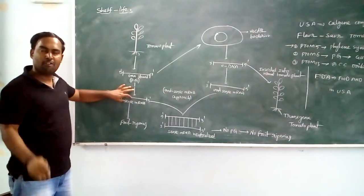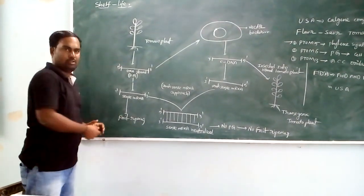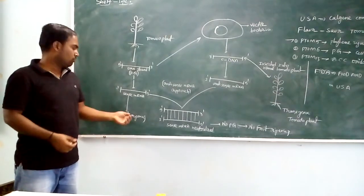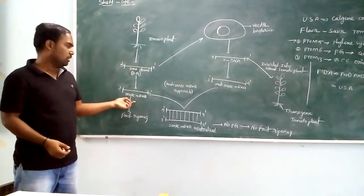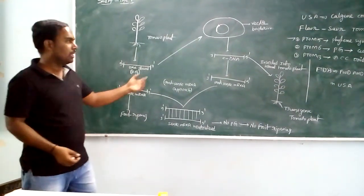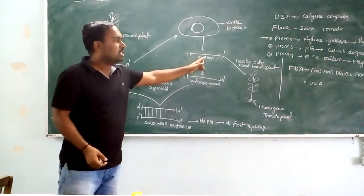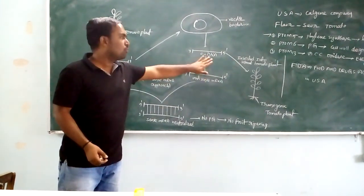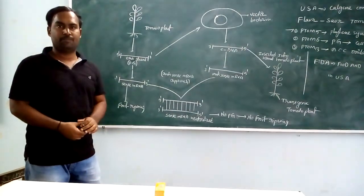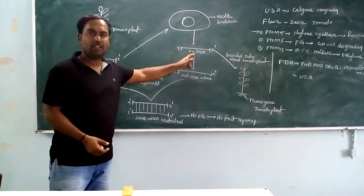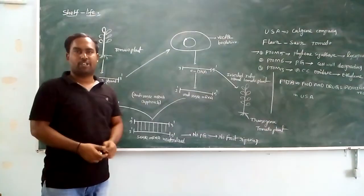This sense mRNA is involved in the formation of fruit. However, this cDNA does not code for any PG gene. This cDNA codes for antisense mRNA.